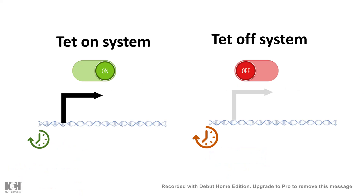In this installment we'll be talking about a genetic manipulation technique which allows us to spatiotemporally control gene expression, especially in the mammalian system. This is called the Tet-On and Tet-Off system. We'll be talking about how we can use this system, what is the basis of the system, and how the system was discovered.